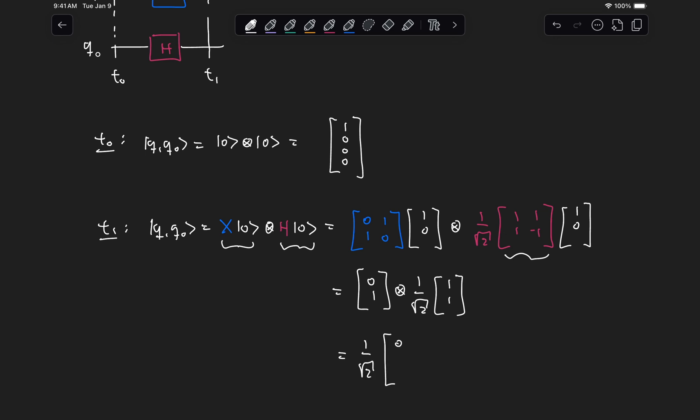And then if we perform this tensor product, we get 1 over root 2 of 0 times the vector 1, 1, and then 1 times the vector 1, 1. So that gives us 1 over root 2, 0, 0, 1, 1.